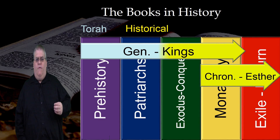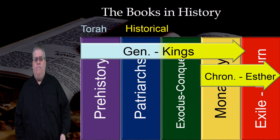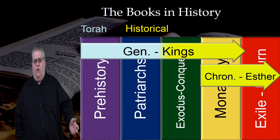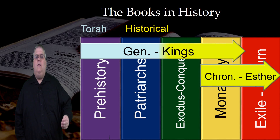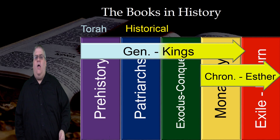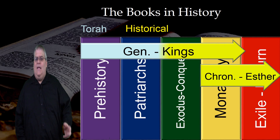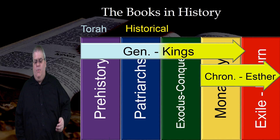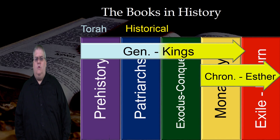The books of Chronicles retell much of the history, roughly overlapping the same period as Samuel and Kings, but then continue into the exile. And then Ezra, Nehemiah, and Esther cover the exile and the return. So the secondary telling of the history covers epics 4 and 5 — the monarchy and the exile return.